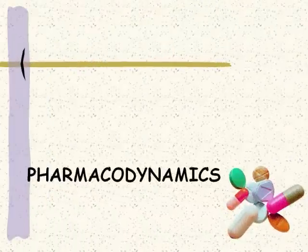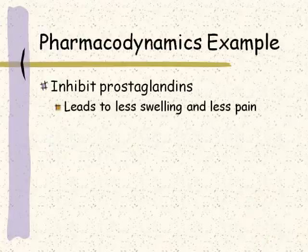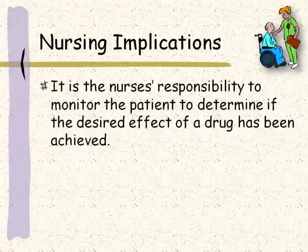Pharmacodynamics is the action of the drug on the body, and when we're talking about that, we're talking mostly about desired drug effect. We've got some side effects to think about, but we're asking: why are we giving this drug? What is this drug doing to the body? As an example, if the drug inhibits prostaglandins, it's going to lead to less swelling and less pain. It's the nurse's responsibility to monitor the patient to determine if the desired effect of the drug has been achieved.